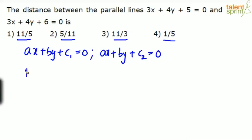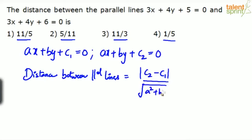In this case, the distance between those parallel lines can be taken as modulus of c2 minus c1 divided by root over a squared plus b squared.